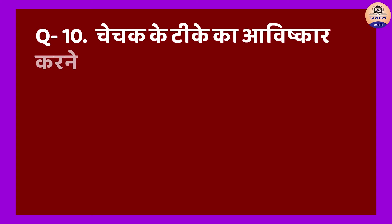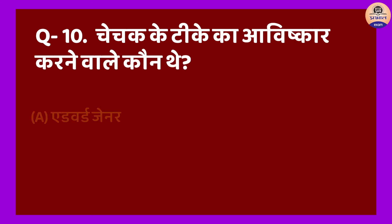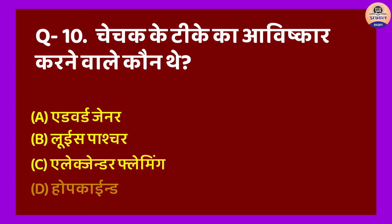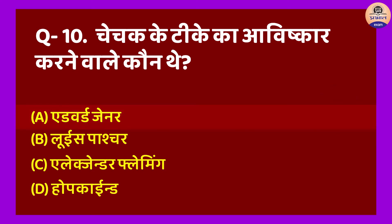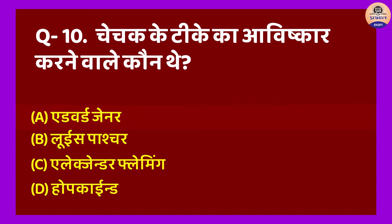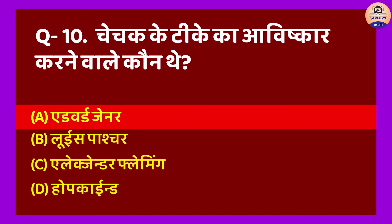Question No. 10: Chechak ke teeke ka aavishkar karne wale kaun the? A. Edward Jenner, B. Louis Pasteur, C. Alexander Fleming, D. Hope Kind. Sahi jawab hoga Option A. Chechak ke teeke ka aavishkar Edward Jenner ne kiya tha. Chechak se sampoorn sharir, khaaskar chehra aur haath-pair prabhavit hote hain. Ye Variola virus ke karan hota hai.